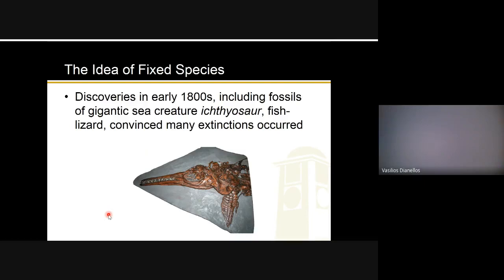In the 1800s there were many discoveries that really made people think. One of your book's examples is a fossil of a gigantic sea creature called an ichthyosaur, which means 'fish lizard.' This fossil really convinced a lot of people that extinctions had occurred. Nothing to memorize for the exam — this is just an example. If you download the PowerPoint and click the picture, there's a short video you can watch on the ichthyosaur.